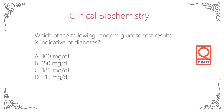Which of the following random glucose test results is indicative of diabetes? A. 100 milligrams per deciliter. B. 150 milligrams per deciliter. C. 185 milligrams per deciliter. D. 215 milligrams per deciliter.